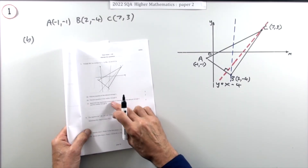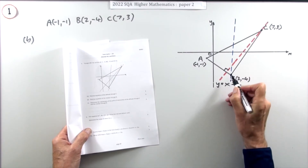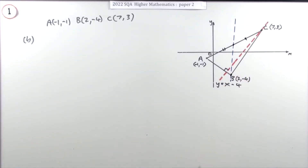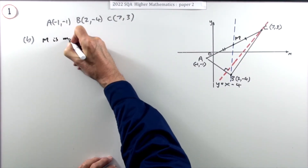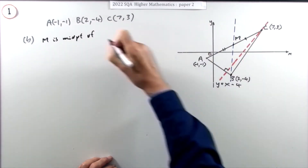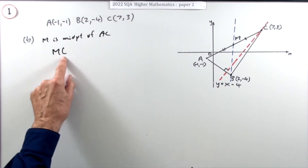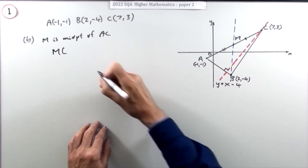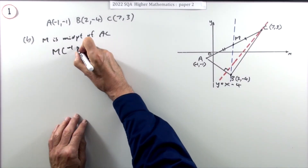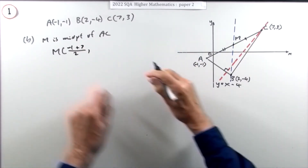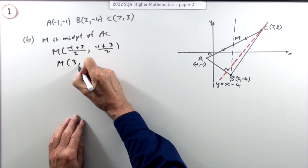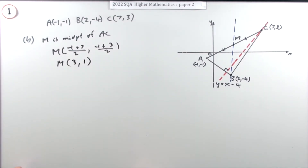Part b, three marks: find the equation of the median through B. From B you draw a line through the triangle until it hits the midpoint of the opposite side AC. Let M be the midpoint of AC. The midpoint is halfway between the x-coordinates and halfway between the y-coordinates: halfway between −1 and 7 is 3, halfway between −1 and 3 is 1. So M is (3, 1), which gets a mark.